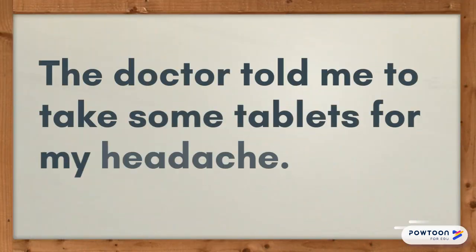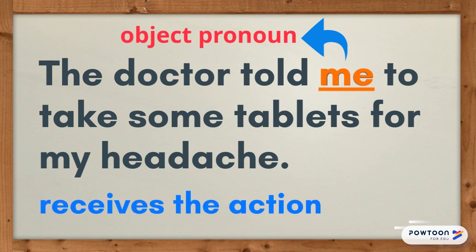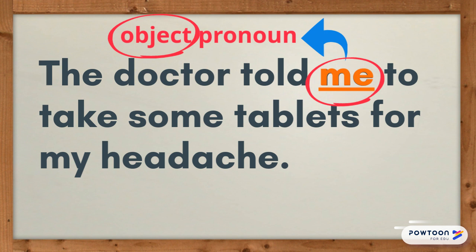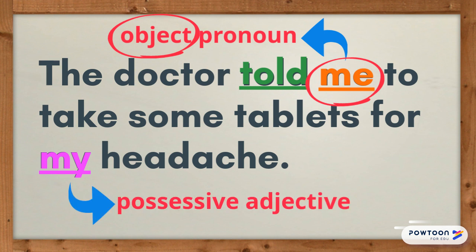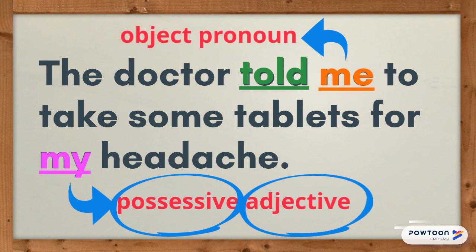Take a look at this example: 'The doctor told me to take some tablets for my headache.' In this example, 'me' is an object pronoun. As I mentioned in my last video, an object pronoun receives the action — in this case, 'me' is the object of the verb 'told'. As for the word 'my', this is a possessive adjective. It's possessive because I'm the one that has the headache, and it's an adjective because it describes a noun — in this case, the word 'headache'.